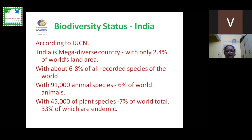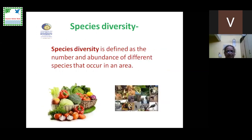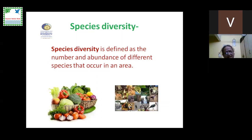I am repeating the word endemic again because that is what is the real precious thing. Now, once we understand a little bit about the numbers, let us understand biodiversity at three different levels, in simple words, because I have tried to keep this entire presentation in a simplified way.